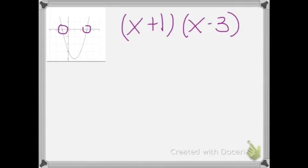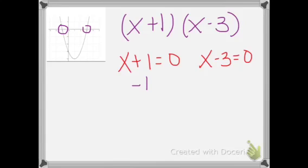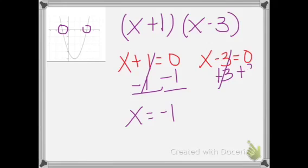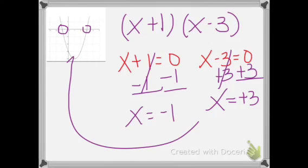We're going to solve and find solutions. It would be x plus 1 equals 0 and x minus 3 equals 0. Solving these, x minus 1 gives x equals negative 1, and the other gives x equals positive 3, which is what our graph shows.